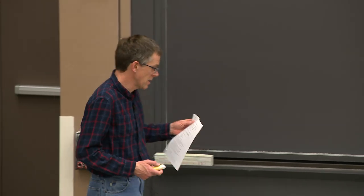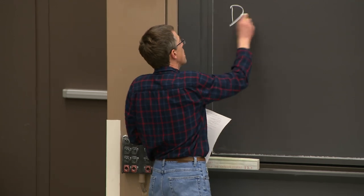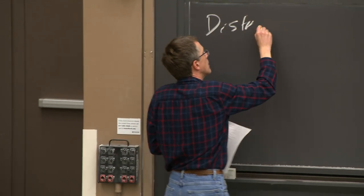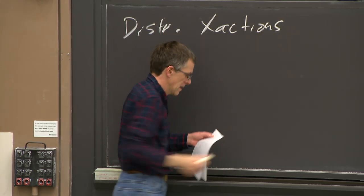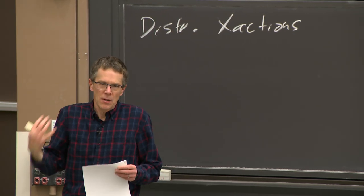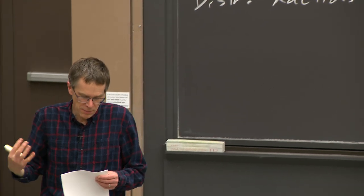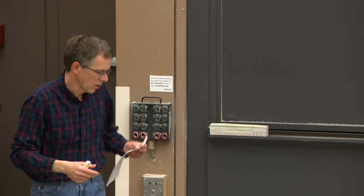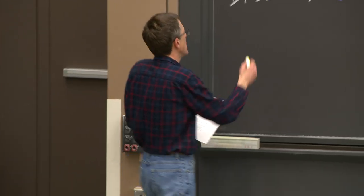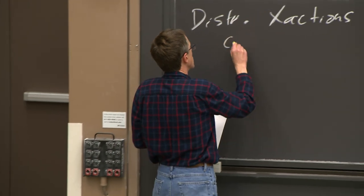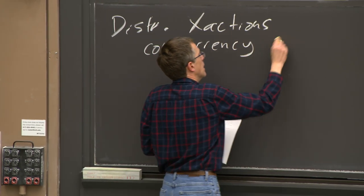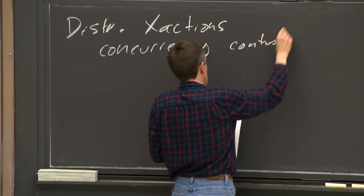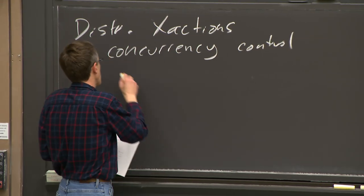Today's topic is distributed transactions. These come in two implementation pieces: the first big piece is concurrency control, and the second is atomic commit.